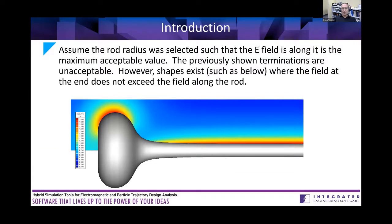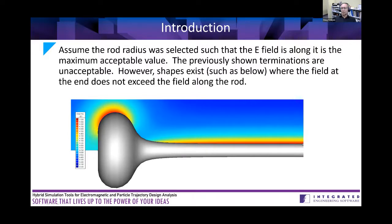Basic variation of parameters is readily possible in software or in the field — if you're observing sparks, you can try different size spheres on the end and see what works. The neat thing about software is that you can experiment with arbitrary shapes and designs. Using the methods I'll describe later, I can figure out a rounding for the end that is not spherical, but where the field on the rounded part nowhere exceeds the field along the middle part. The standard goal I'll be assuming is: design terminations that don't exceed the field seen in the simpler middle section.